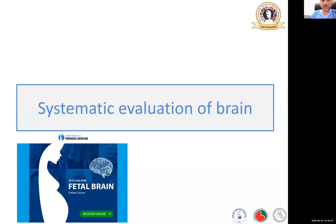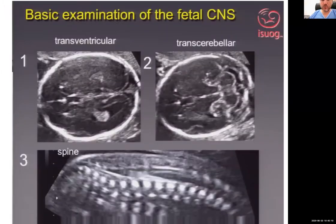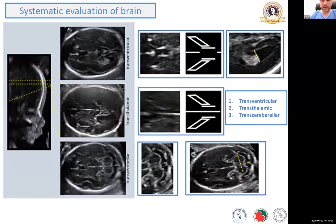We're going to start with how to do some basic things like a systematic evaluation of the brain. One of the most interesting things in fetal medicine regarding the brain is that it's one of the structures that keep changing throughout pregnancy. So it's one of the most difficult structures to assess during these first weeks of pregnancy. We do have some standard views in order to get the best we can out of the assessment of the fetal brain, and then we add some more planes that we can get through the brain.